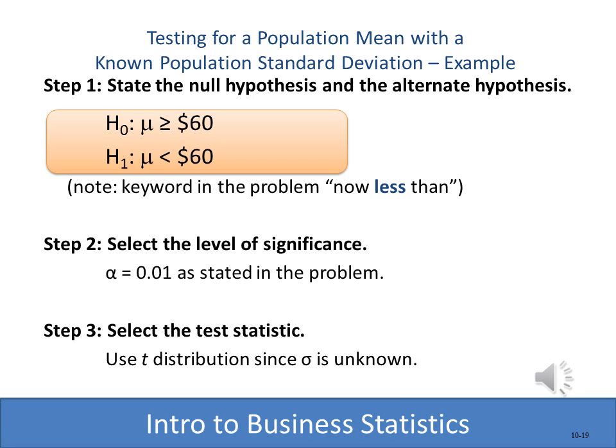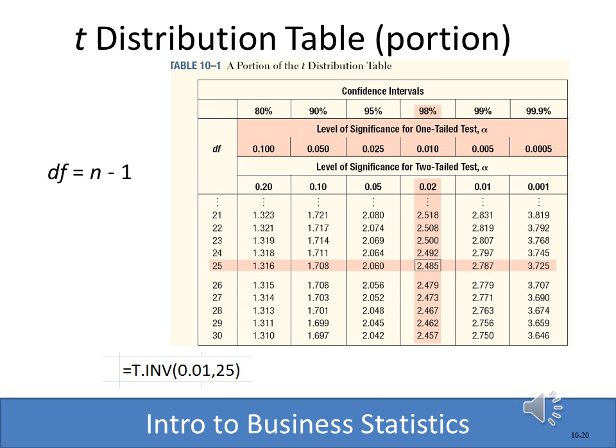Back to the insurance claim example: the null hypothesis is greater than or equal to 60, the alternate is less than 60, and the significance level is 0.01 — we only want a 1% chance of rejecting a true null. The test statistic will be the t because we don't know the population standard deviation. We look up the critical t value using degrees of freedom of n minus one, which is 25, and a one-tail test at 0.01 significance. The critical value comes out to 2.485. This is the value we compare our computed t to in order to determine whether to reject or not reject the null hypothesis.